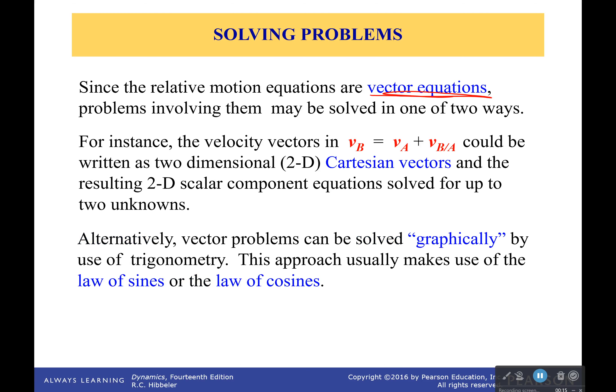For one thing, they could be written as two-dimensional Cartesian vectors, and we can then say all the 2D scalar components can be solved to figure out all the unknowns. So we break it into components, we solve that way, we've done it a whole bunch before.